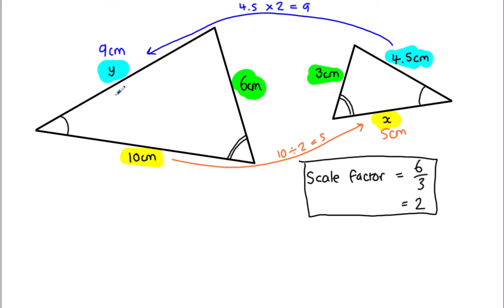So in this video: congruent is when shapes are identical in shape and size. Similar is when they're the same shape but different sizes. I showed you that you can prove they're similar if they've got the same angles, or if you work out all the scale factors and they're the same. And if you know the scale factor, you can multiply or divide to work out missing sides on the triangles.